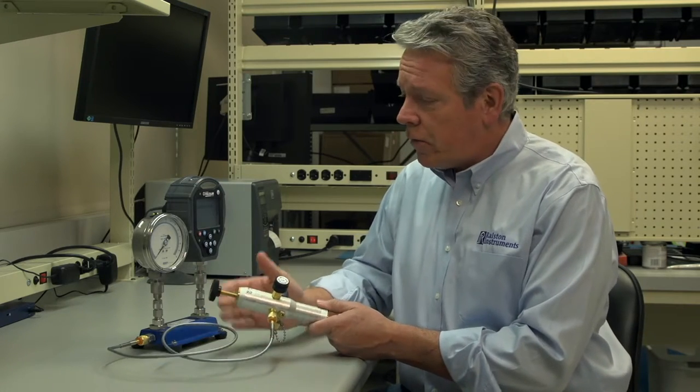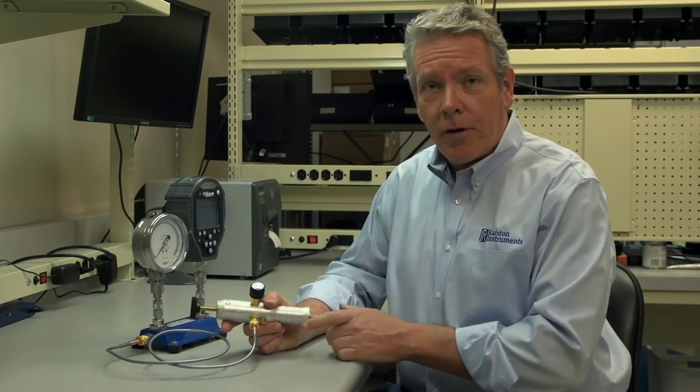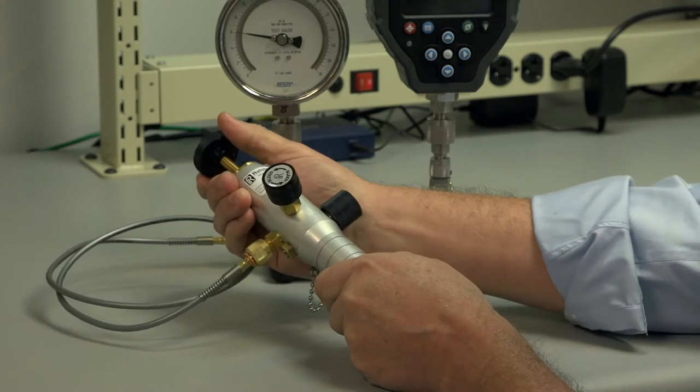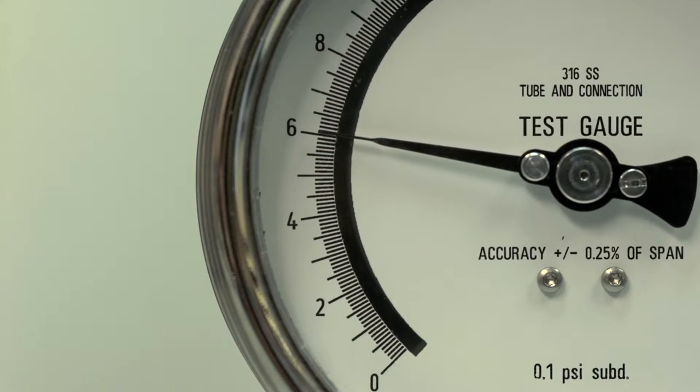Now we'll apply pressure to achieve a reading of our cardinal point on the device under test, and then we'll precisely dial in with a vernier so our needle falls exactly on six psi. Since it does fall on a major hash mark it makes the setting much easier and more accurate.